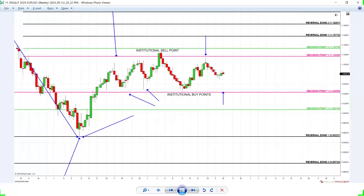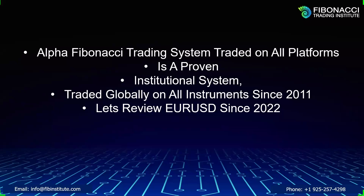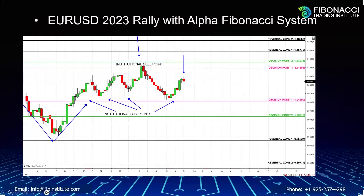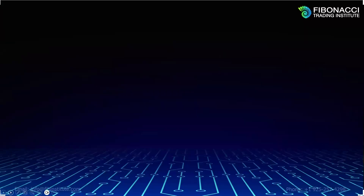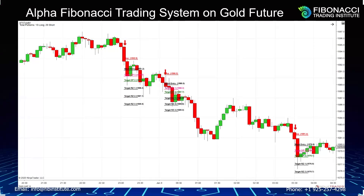That is strategic, intelligent trading — pure price for entry and Alpha Fibonacci for exits. Your choice is whether you want to trade Euro, Bitcoin, NVIDIA, Amazon, or any instrument. When you day trade futures with precise entry, stop, and target, simply choose your top trade. Simply ride institutional power. And that is the example of the bearish trade on Gold futures — choice, it is absolutely yours.